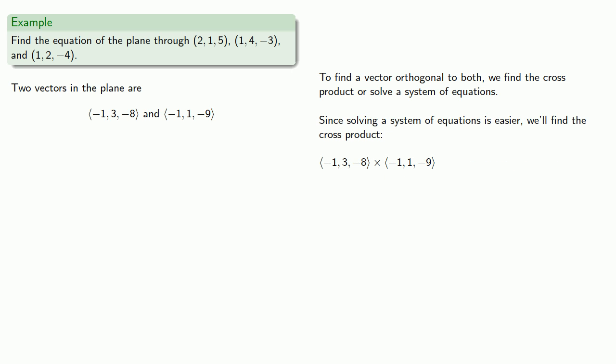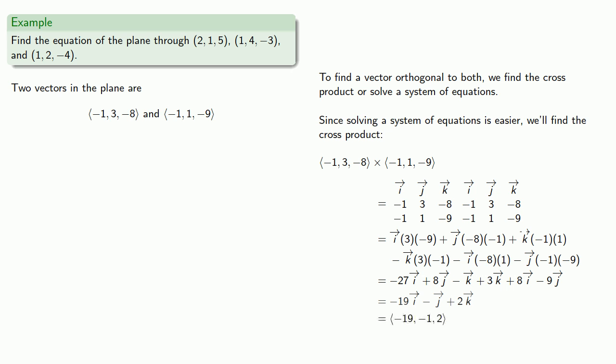The cross product takes a little bit of managing. So our cross product will be the determinant of the matrix whose first row is i, j, k, and whose second and third rows are the components of our two vectors. We'll use the rule of Sarrus to find the determinant. We'll double the matrix and then take our down right diagonals, then subtract the down left diagonals. And that gives us our orthogonal vector: (-19, -1, 2).